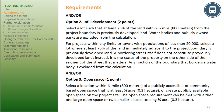Option 2, In-Field Development, for 2 points: select a lot such that at least 75% of the land within 1.5 miles (800 meters) of the project boundary is previously developed land. Water bodies and publicly owned parks are excluded from the calculation. For projects within city limits or towns with populations less than 20,000, select a lot where at least 75% of the land immediately adjacent to the project boundary is previously developed. A bordering street itself does not constitute previously developed land; it is the status of the property on the other side of the street that matters. Any fraction of the boundary bordering a water body is excluded.